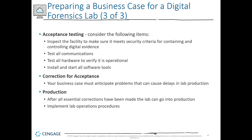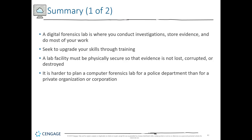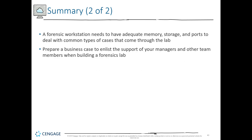The last part is acceptance testing — making sure you have everything to be operational: software, hardware, communication, policies, procedures, and the facility. Everything needs to be in place for you to be operational, and if it's not, you have a corrective action plan for acceptance so you can become productive. We talked about the lab requirements, the workstation needs, how often you should be replacing hardware, and building a business case to grow your lab when necessary.